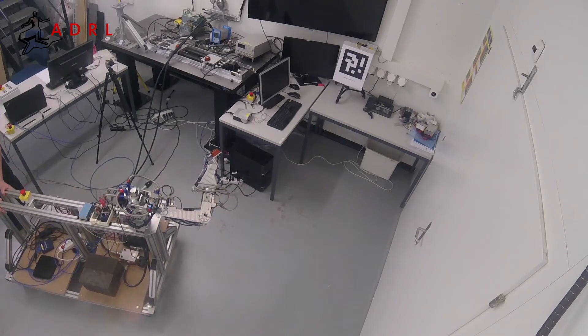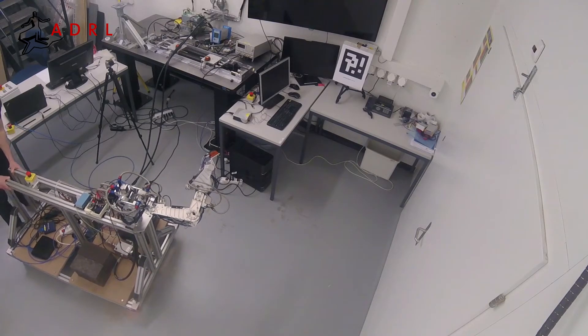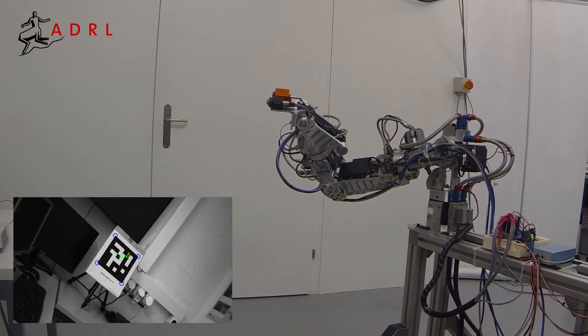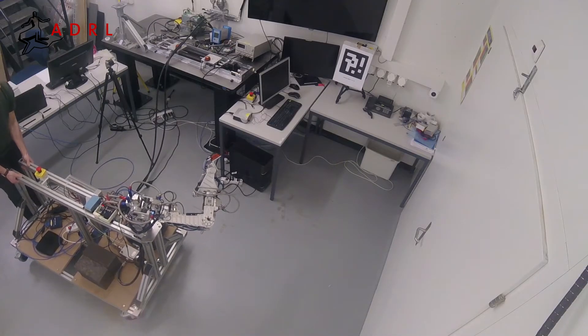Here the system is trying to maintain a constant end effector pose while the base of the arm is disturbed manually. The control system has no prior knowledge of how the base will be moved, yet it can effectively decouple the end effector motion from that of the base.